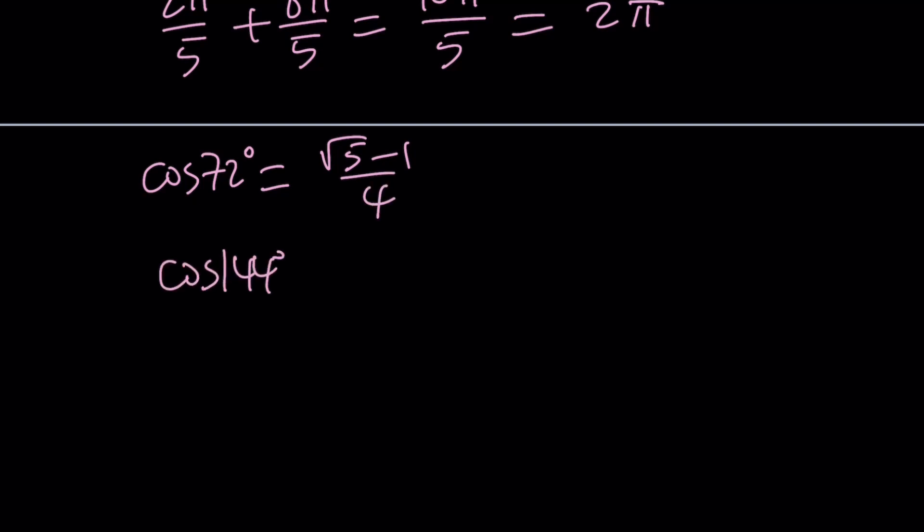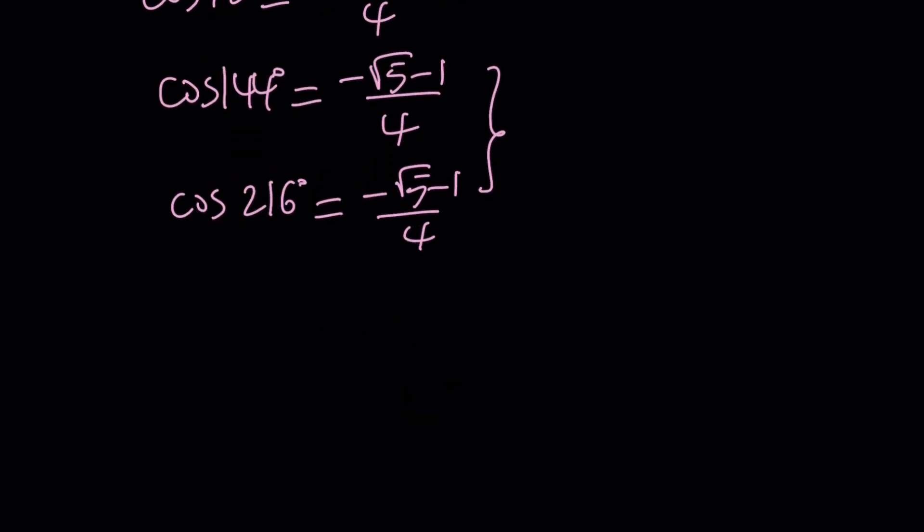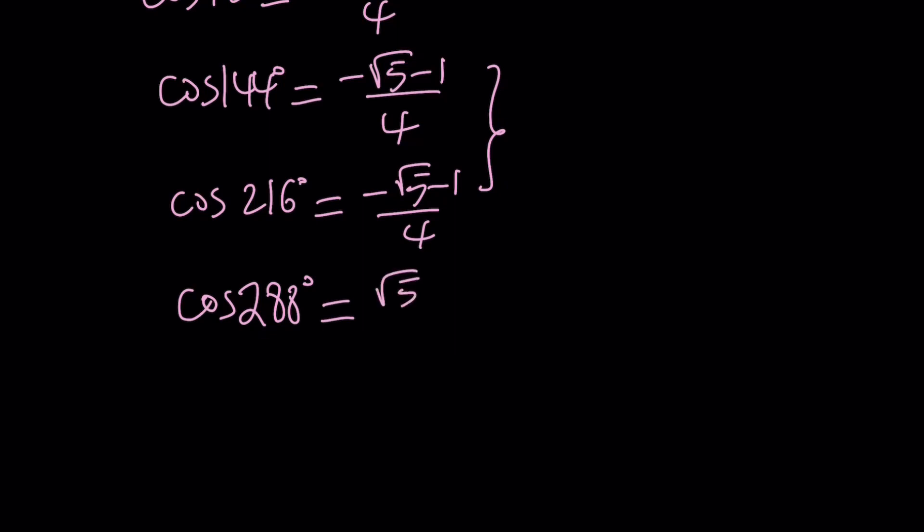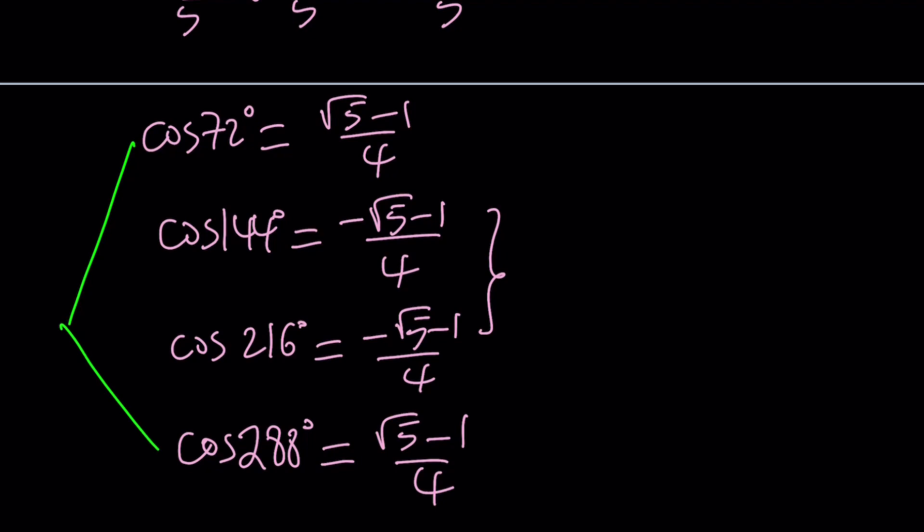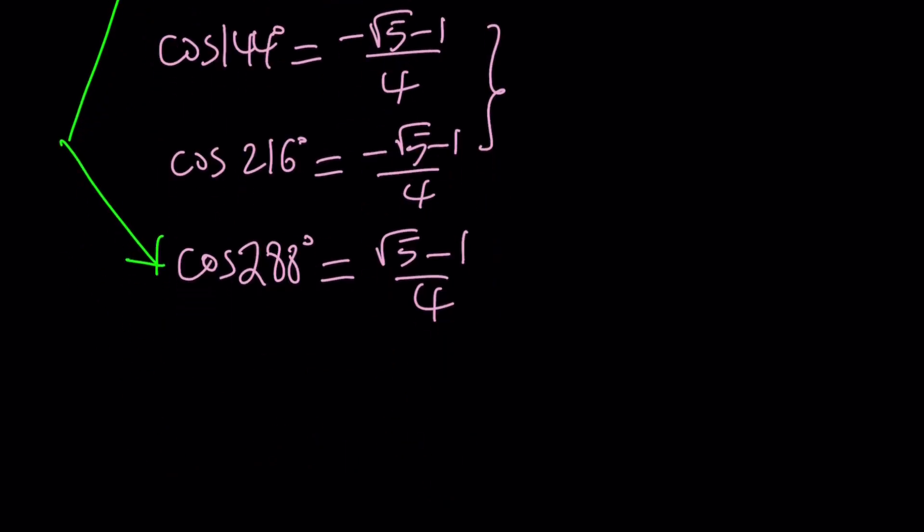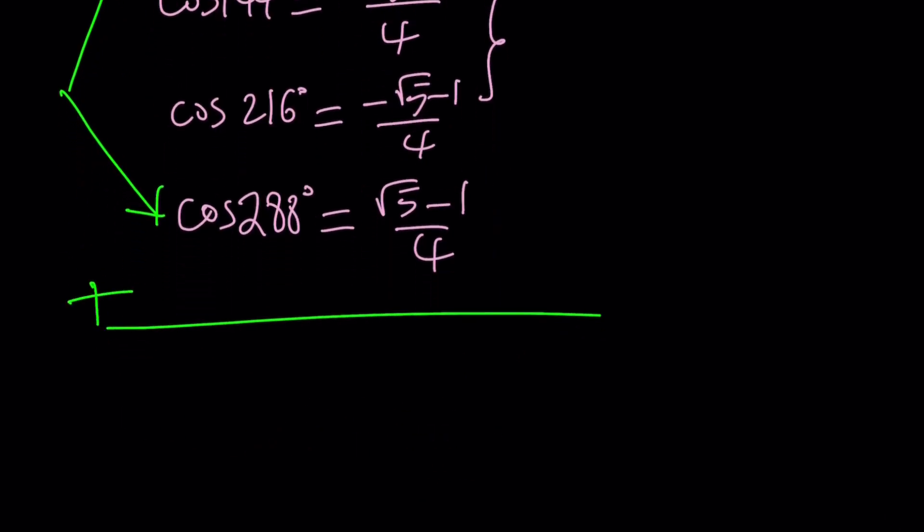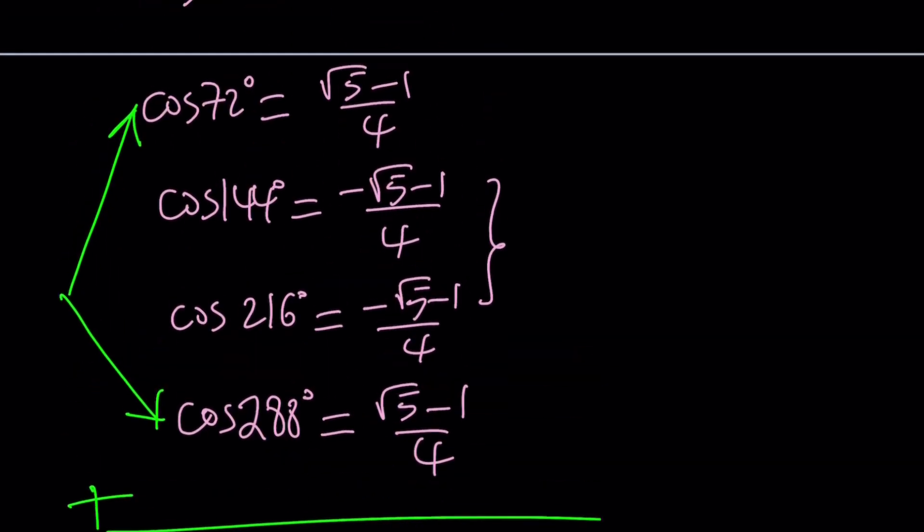Cos 144°, which is 2 times that, is going to be negative (√5 + 1)/4, kind of like a conjugate. And then cos 216°, which is the 6π/5, that will be negative (√5 + 1)/4. Again, these two are equal because they add up to 360, obviously. And you know that cosine is an even function. And cos 288° is going to be the same thing as cos 72°. So by finding two values, you are actually finding four values. And then you can go ahead and add these up. When you add these numbers, you're supposed to be getting negative 1.